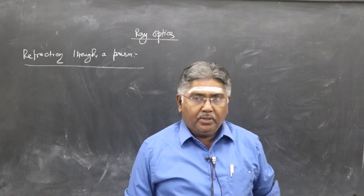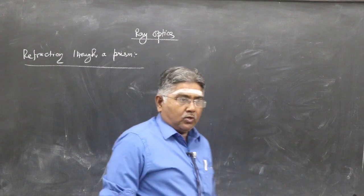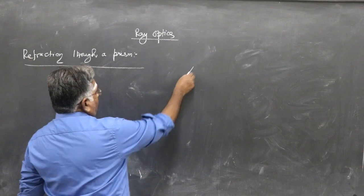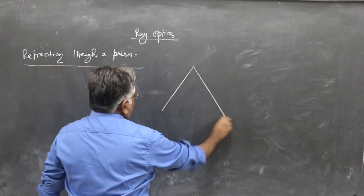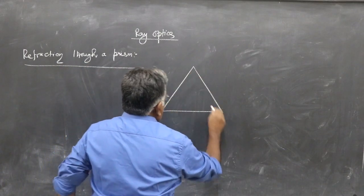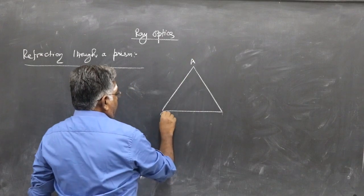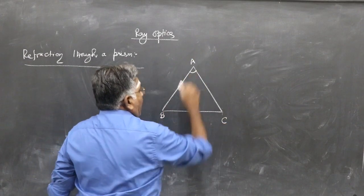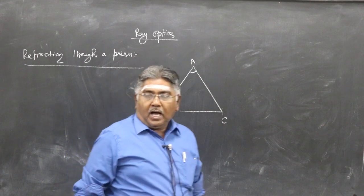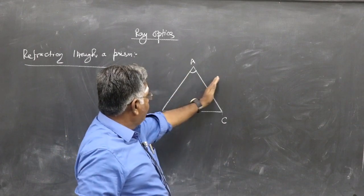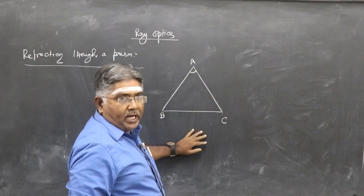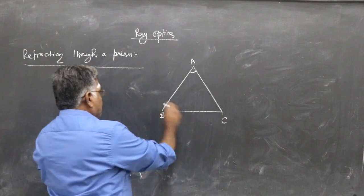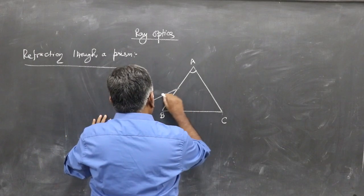We study refraction through a prism. We draw the prism and call its corners A, B, and C. The angle A is the angle of the prism — the angle enclosed by the two refracting sides is known as the angle of the prism. We take an incident ray going into the prism.